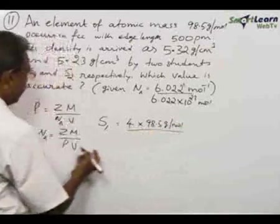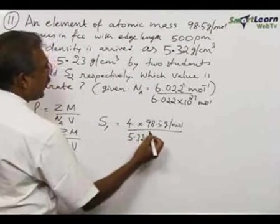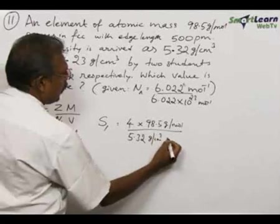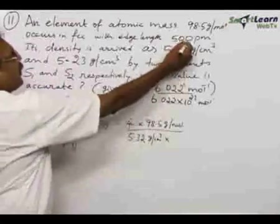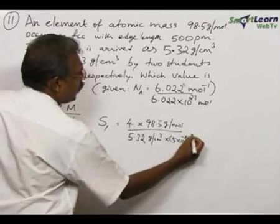Divided by density according to him 5.32 gram per centimeter cube, and the edge length 500 pm, which is 5 × 10⁻⁸, the whole cube.